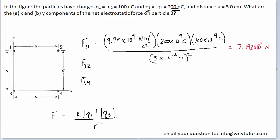We perform a similar calculation for the force that particle 2 is exerting on 3, but we must be careful about the distance between particles 2 and 3. Drawing that distance on the diagram, we form a right triangle where both legs are length A. In the special case of an isosceles right triangle with equal legs, the hypotenuse equals one leg times the square root of 2. So the distance between particles 2 and 3 is A times the square root of 2.